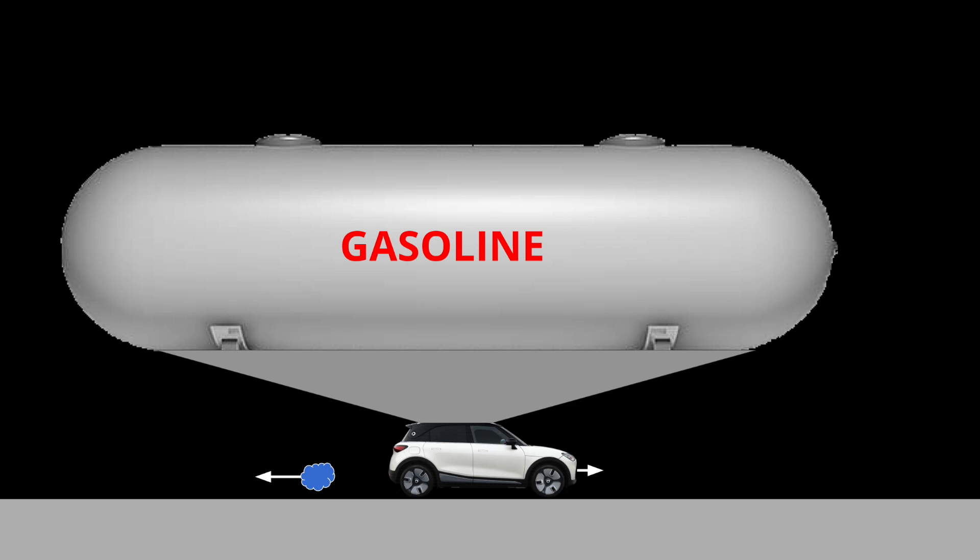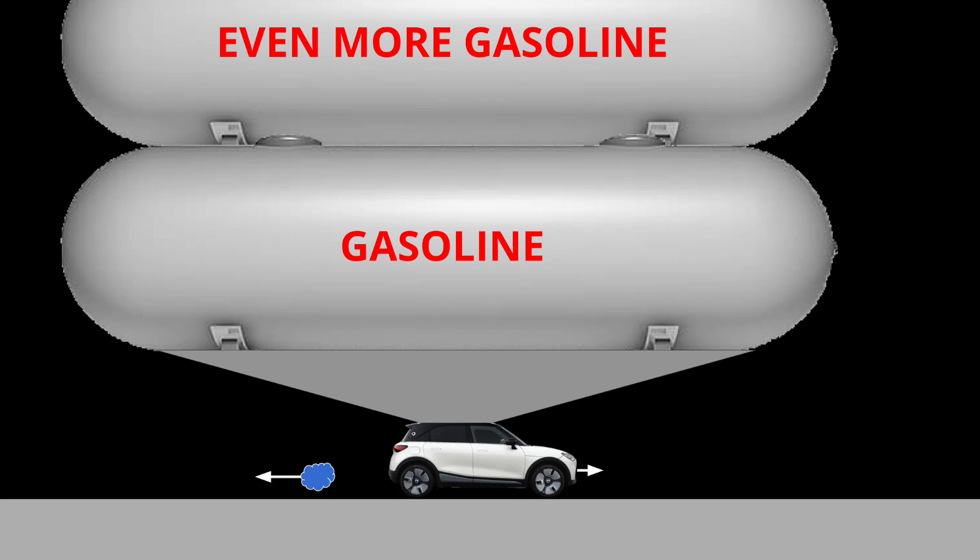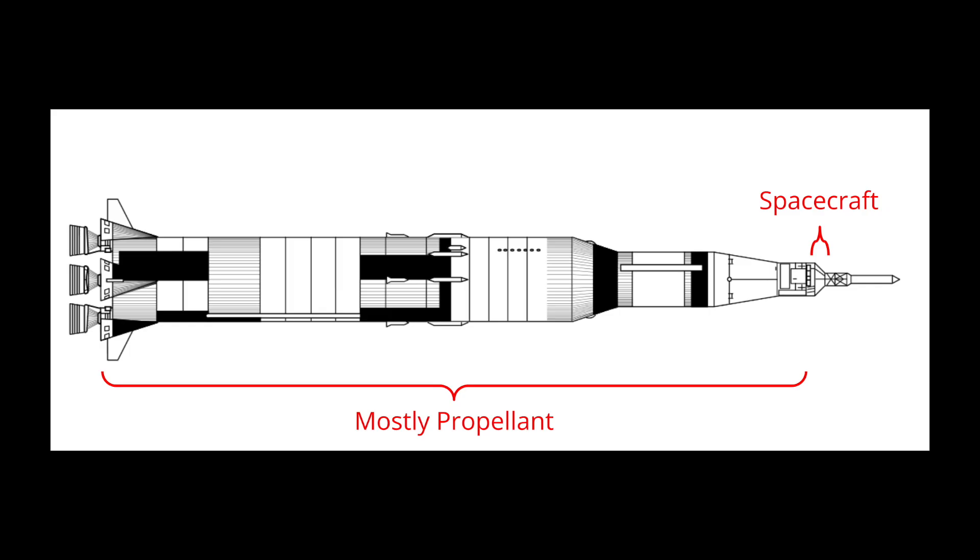It gets even more annoying because we need to carry that propellant with us until we're ready to use it, which means we need to add even more propellant just to carry around our propellant. This is how we end up needing humongous rockets just to launch a tiny satellite. It's like driving a car that's 99% gas tank.